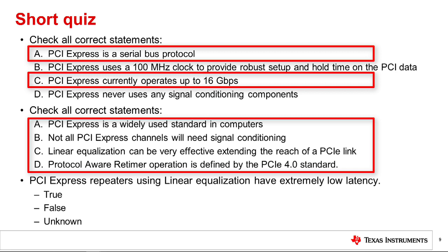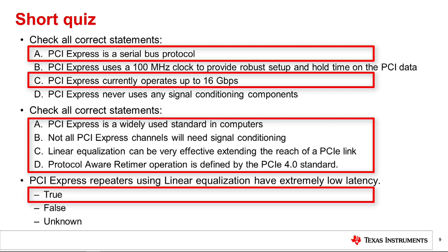Finally: PCI Express repeaters using linear equalization have extremely low latency. Is it true, false, or unknown? The answer is true. Repeaters with linear equalization have a typical latency of only 100 picoseconds. This isn't much slower than the signal's propagation speed along the transmission line itself.